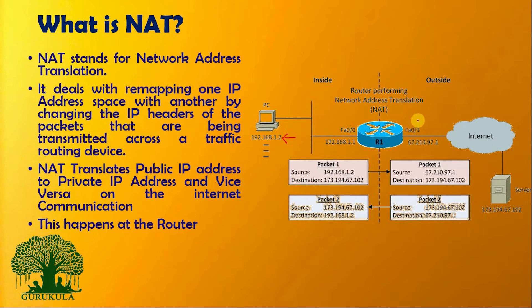This is where we need a Network Address Translator. Network address translation happens at your router. As you can see in this figure, NAT translates public IP addresses to private IP addresses and vice versa for internet communication. So the primary purpose of network address translation is the conversion of private IP addresses to public IP addresses and vice versa.